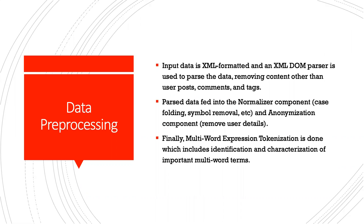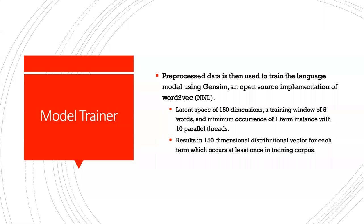Finally, a multi-word expression tokenization was done, which included identification and characterization of important multi-word terms, similar to 'Mirai botnet' or 'internet of things.' Pre-processed data is then used to train the language model using Gensim, an open source implementation of Word2Vec. A latent space of 150 dimensions, a training window of five words, and a minimum occurrence of one term instance with 10 parallel threads were used.